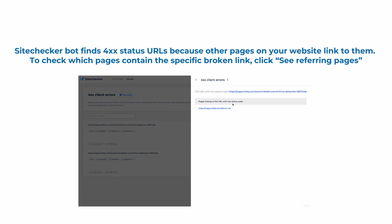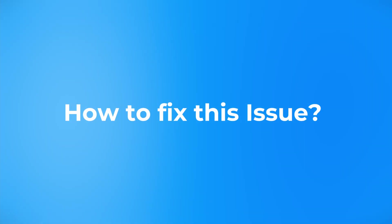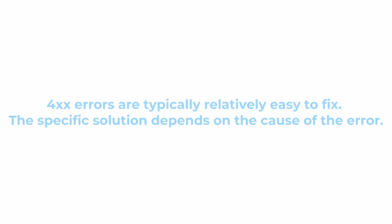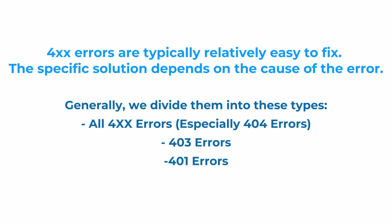So when we found all the URLs we need, the next question is how to fix the issue. Such errors are typically relatively easy to fix, and the specific solution depends on the cause of the error. Generally, we divide them into these types: the first one would be all 400 status errors, especially 404 errors; the next one is 403; and the last one is 401.